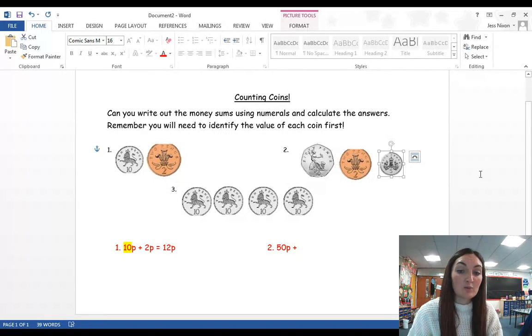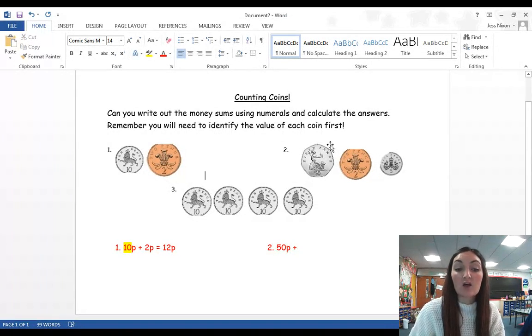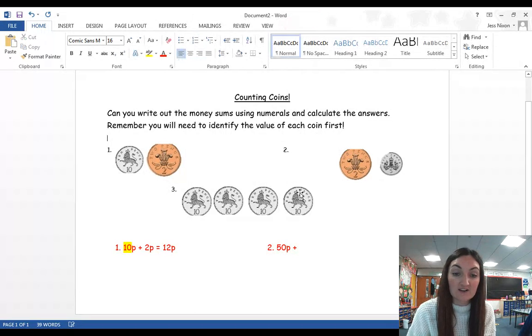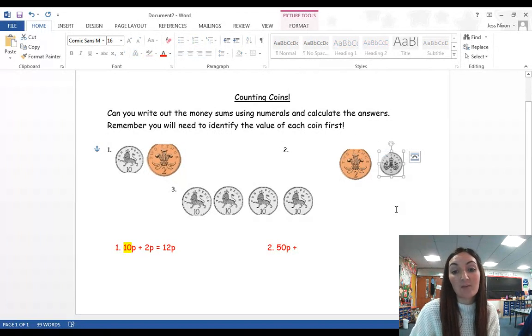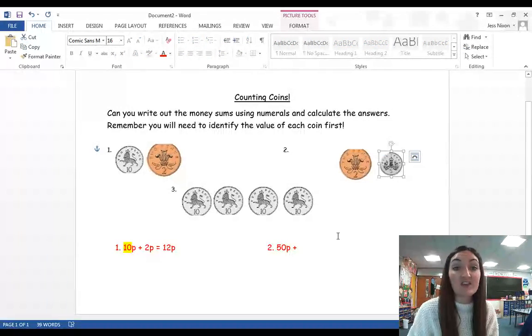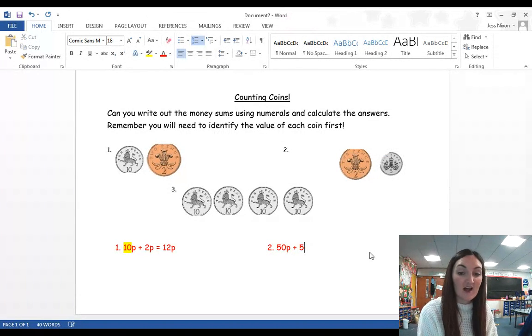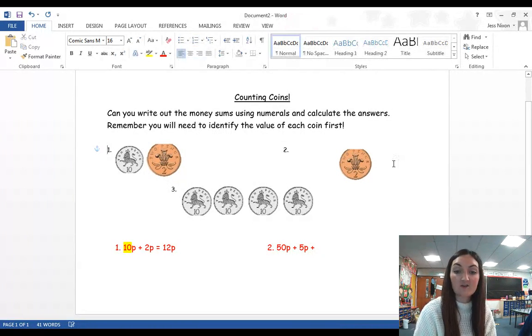Then, I have a 2 pence, and I have a 5 pence. The other thing that you might want to do, you might want to draw a line through the coin once you've written it down, so you don't get confused. So, Miss Nixon can't draw a line on here, so I'm going to delete that coin because I've written it down here. Now, I've got a 2 pence, and I've got a 5 pence, and I know that 5 is bigger than 2, so I'm going to add that one next. 5 pence.